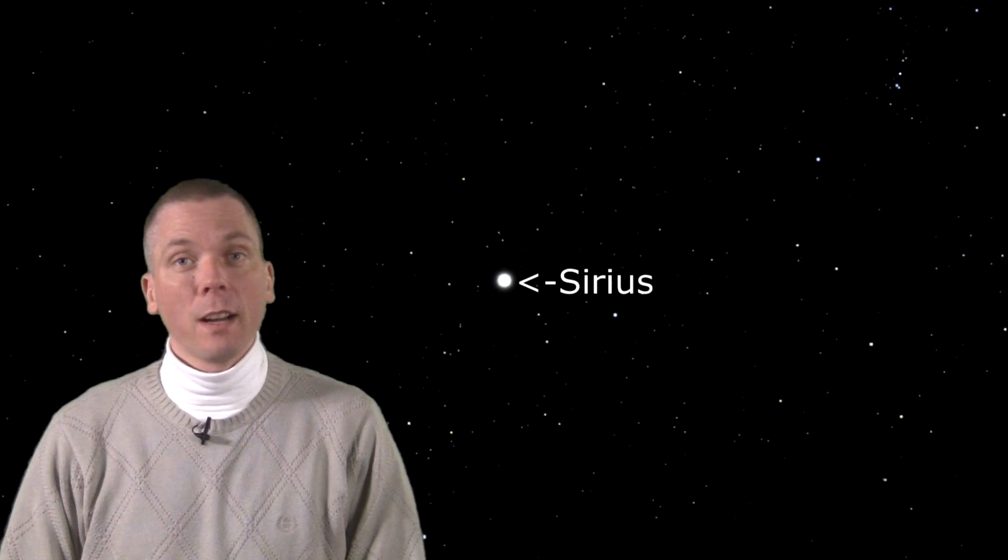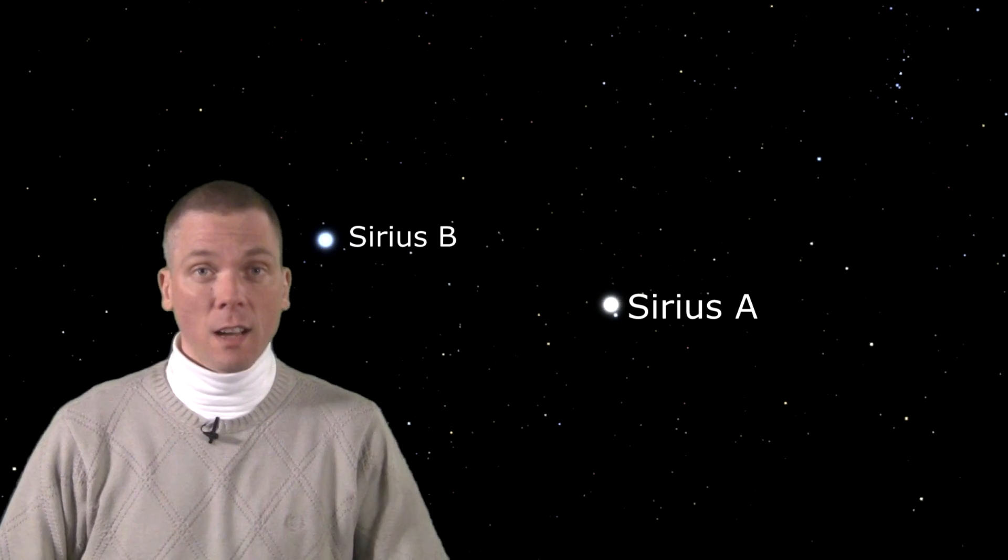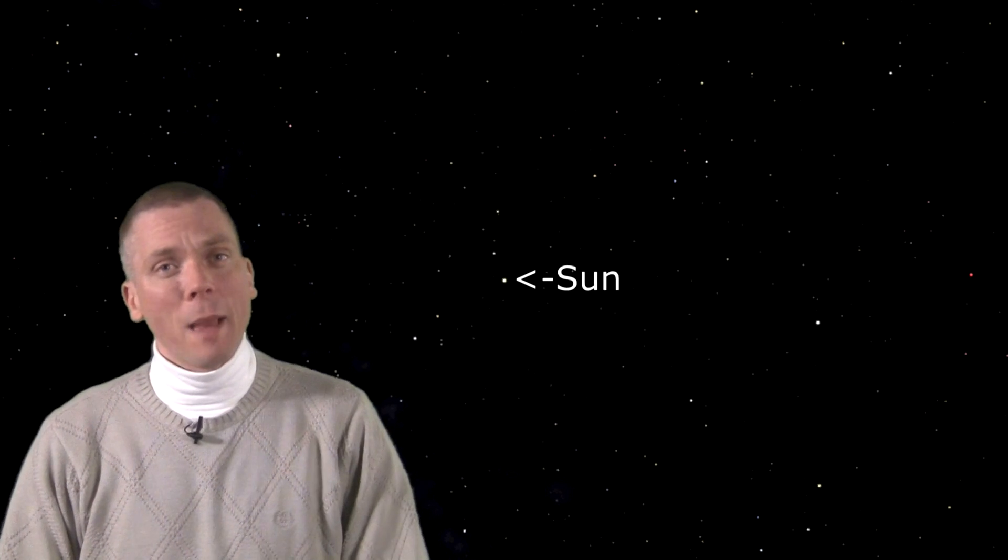So if we were orbiting Sirius, our Sun would not appear nearly as bright in the sky as Sirius does to us here. Certainly it would still be quite noticeable, but as a more average looking 2nd magnitude star.